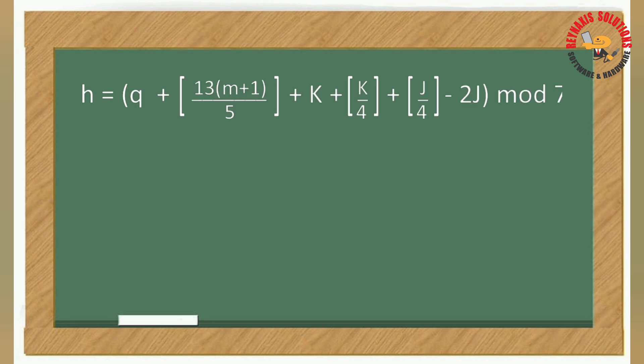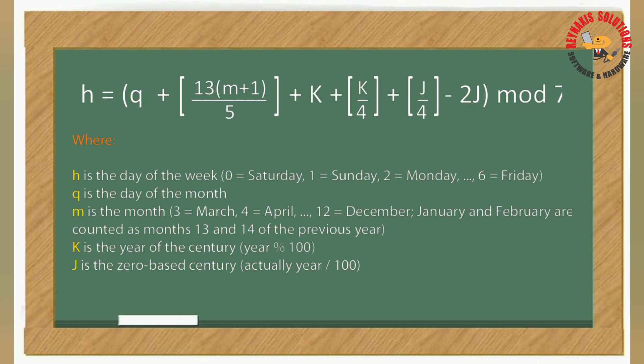In this formula we are looking for the value of letter h which is the day of the week. We'll replace the other letters in the formula with the information from the given date, so the letter q is the day of the month, m is the number of the month, the letter k is for the year of the century, and the letter j is for the zero-based century.